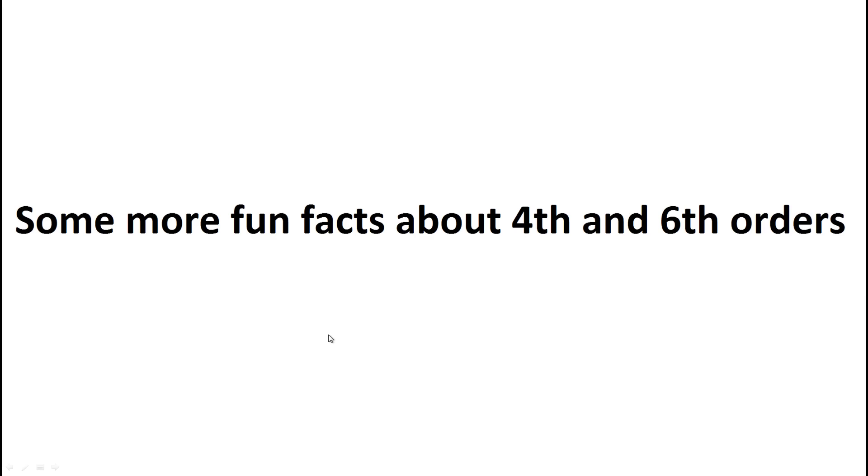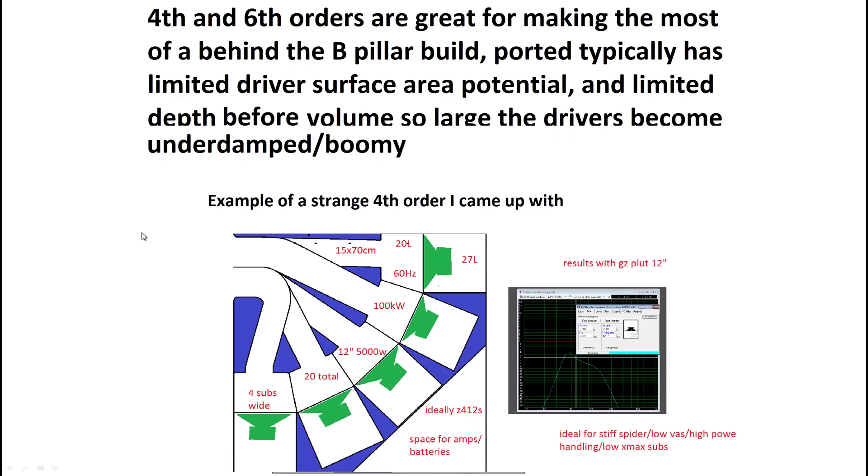Anyway here's some fun facts about fourth and sixth orders. They make the most of a behind the B pillar build. In a flat wall you might only have space for four fifteens and then the port. But because a fourth order and sixth order is only the port anything behind that you can just fill with subs. You can put for example this one here, this is a build but you can see four subs, it's a four by four cube foot cube and you can see how many subs on the front here with the port. So that's why another reason why fourth orders and sixth orders are popular in loud builds because you can fit a lot of drivers into them.